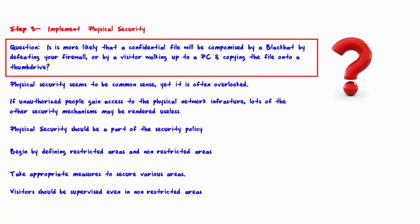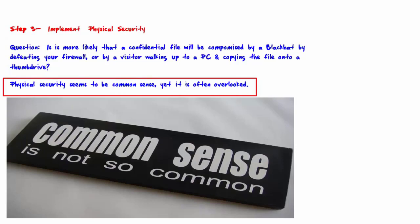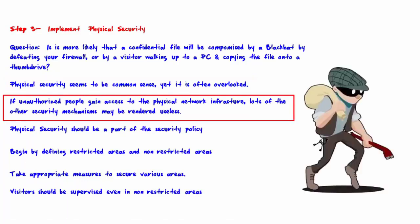Is it more likely that a confidential file will be compromised by a black hat defeating your firewall, or by a visitor walking up to a PC and copying the file onto a thumb drive? In general, the answer is the latter, which underscores why you need to implement physical security. Physical security may seem to be common sense, yet it is often overlooked. If unauthorized people gain access to the physical network infrastructure, lots of other security mechanisms may be rendered useless.